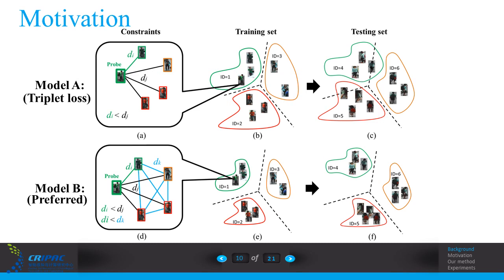So we can see the model B has a stronger constraint than model A, because it requires the distance of positive pair, the green D, has to be smaller than the distance of all the negative pairs, no matter black D or blue D. That's what we preferred.